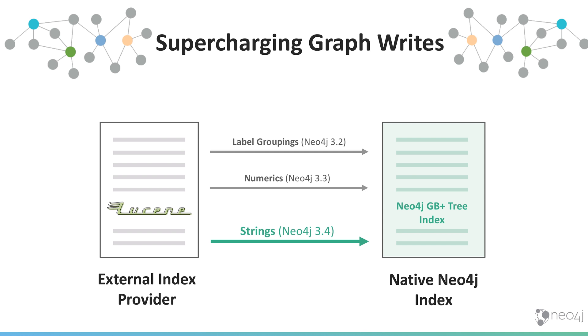Our native Neo4j index is optimized for graph. It's ACID compliant, allows you fast reads, and approximately 10 times faster writes.